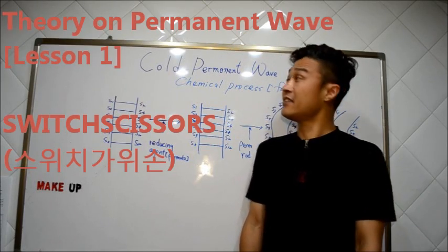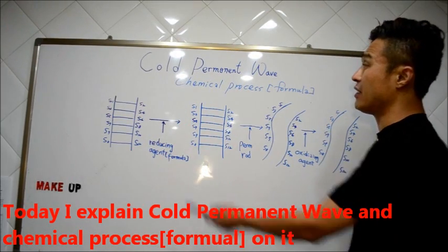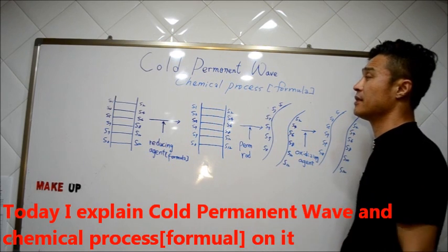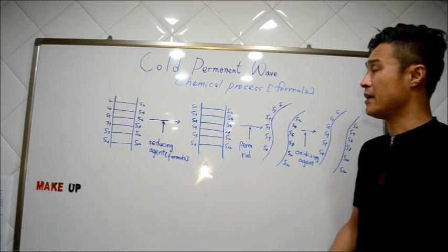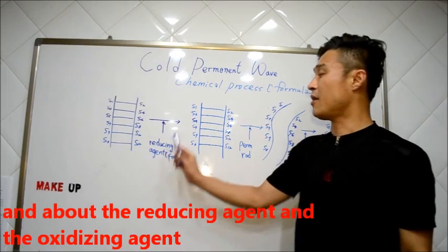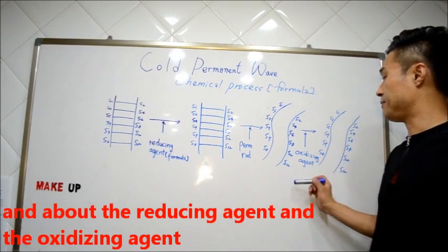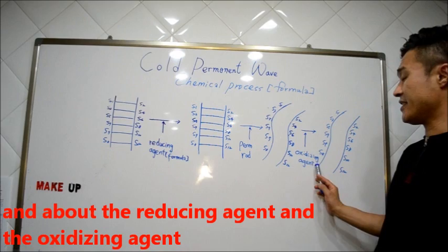Hi, I am Switches. Today I will explain cold perm with chemical process formula about reducing agent and oxidizing agent.